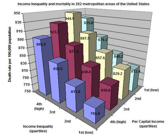Healthcare reform is driving change to traditional hospital reimbursement models. Prior to the introduction of the Patient Protection and Affordable Care Act (PPACA), hospitals were reimbursed based on the volume of procedures through fee-for-service models. Under the PPACA, reimbursement models are shifting from volume to value. New reimbursement models are built around pay-for-performance, a value-based reimbursement approach, which places financial incentives around patient outcomes and has drastically changed the way US hospitals must conduct business to remain financially viable.